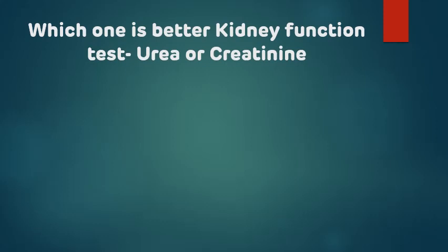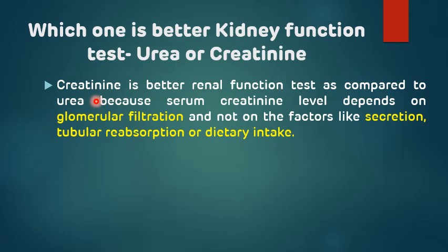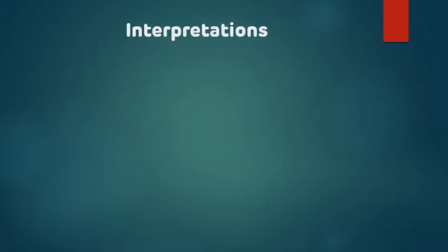There are two tests frequently done in the kidney function test: one is urea and another is creatinine. Urea is the end product of protein metabolism, while creatinine is synthesized from creatine in the muscle. Creatinine is the better kidney function test compared to urea because serum creatinine level depends only on glomerular filtration and not on other factors like tubular secretion, tubular reabsorption, or dietary intake.